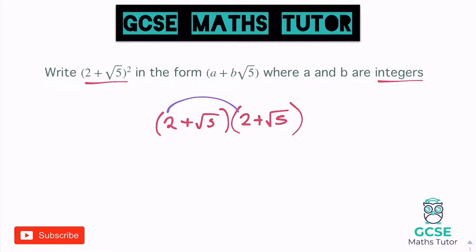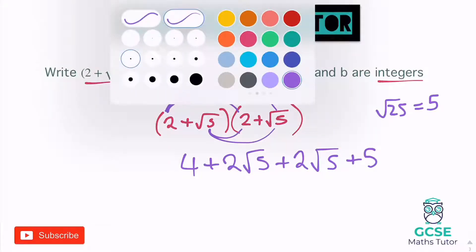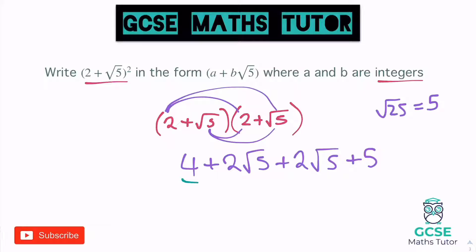Same process: 2 times 2 is 4. 2 times root 5 is plus 2 root 5. And we have another plus 2 root 5. The final one: root 5 times root 5 is root 25. They're both positive symbols this time, so it's not going to turn negative — we just have plus 5, because root 25 is 5. Tidying it up: 4 and 5 makes 9, and 2 root 5 add another 2 root 5 makes 4 lots of root 5. So the answer is 9 + 4√5.